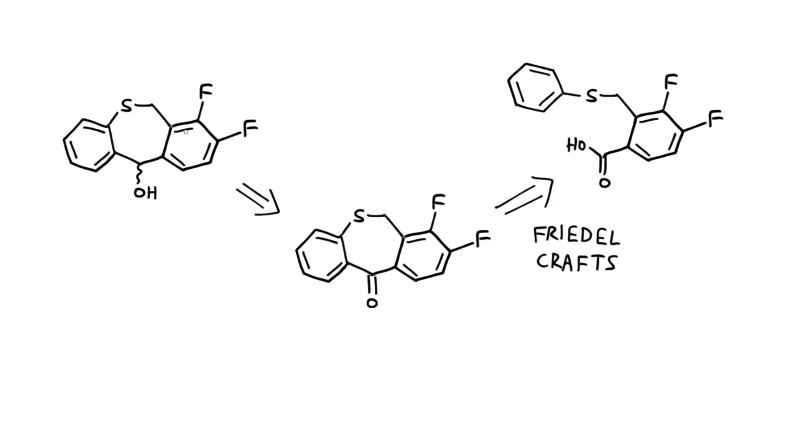It's not immediately obvious how to make this dibenzothiophane building block, but thinking retrosynthetically, if this hydroxy group can be derived from a carbonyl, that enables us to do a Friedel-Crafts disconnection and get back to a carboxylic acid. This aryl benzyl thioether starts to look more tractable.